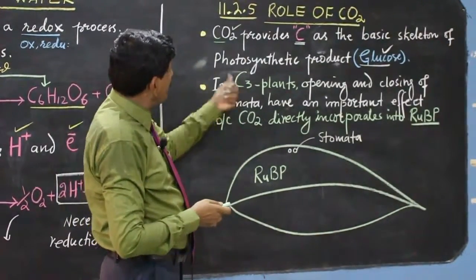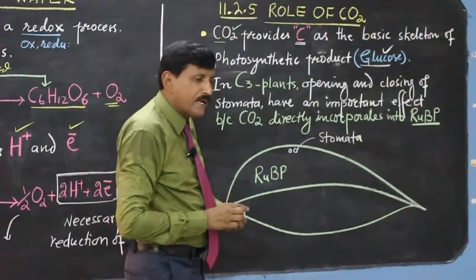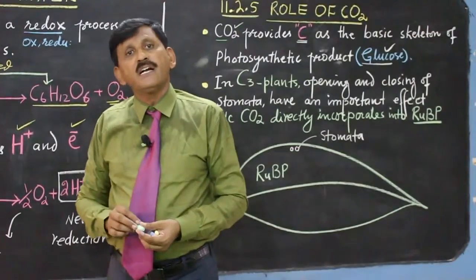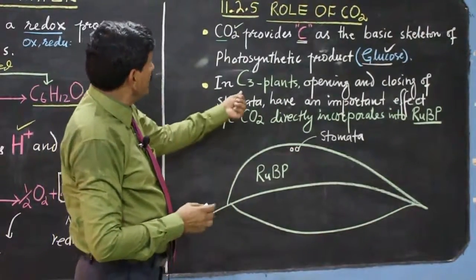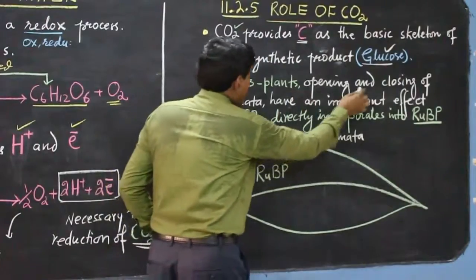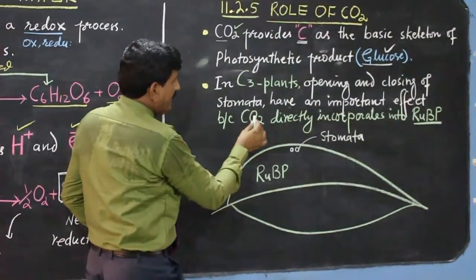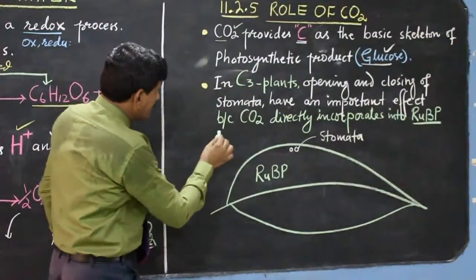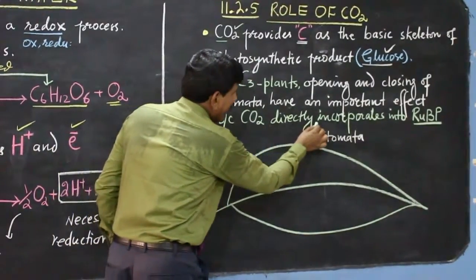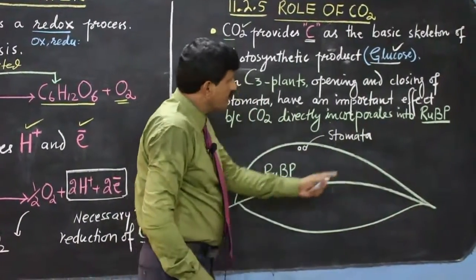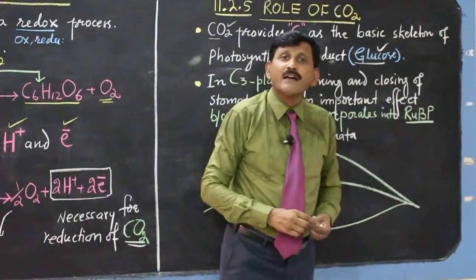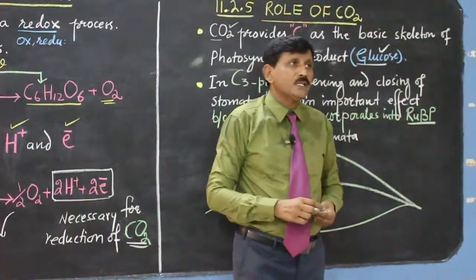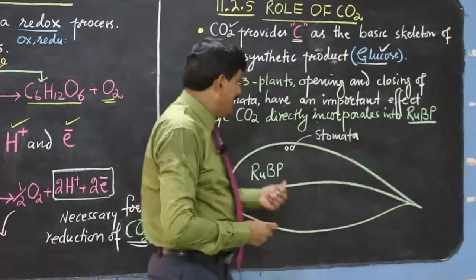In C3 plants — those in which the first product during photosynthesis is a three-carbon sugar — the opening and closing of stomata has an important effect, because carbon dioxide directly incorporates into the pentose sugar ribulose bisphosphate, which is a phosphorylated sugar intermediate in C3 plants.